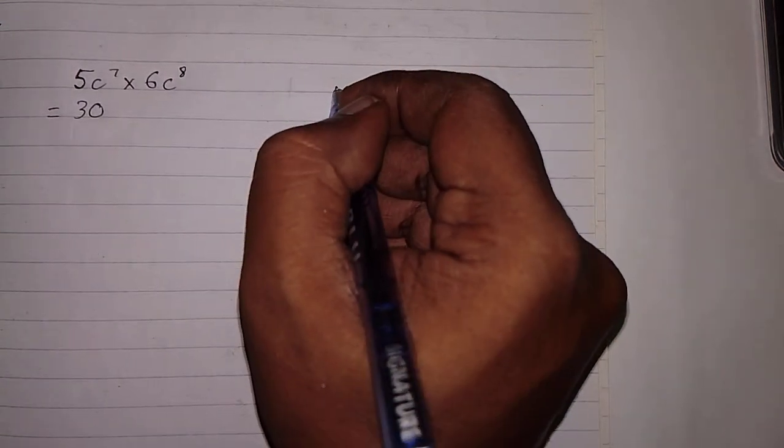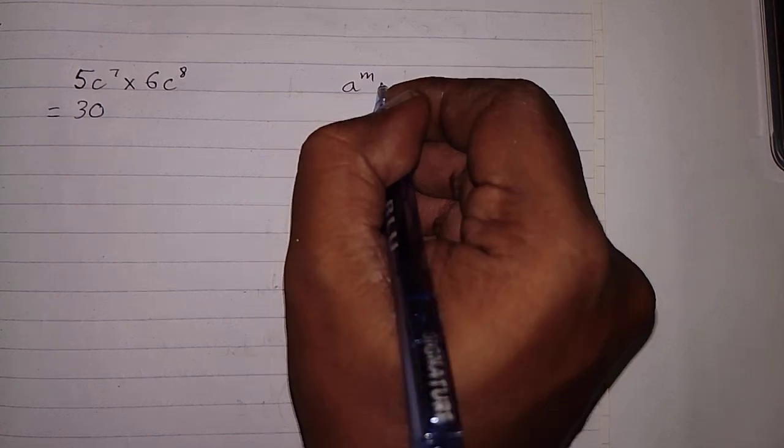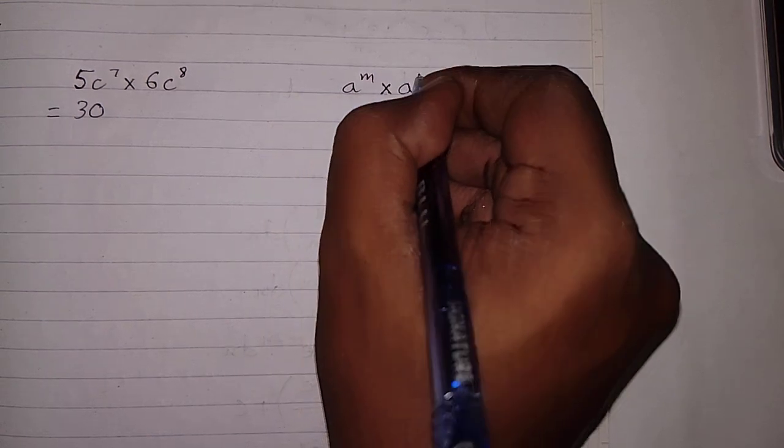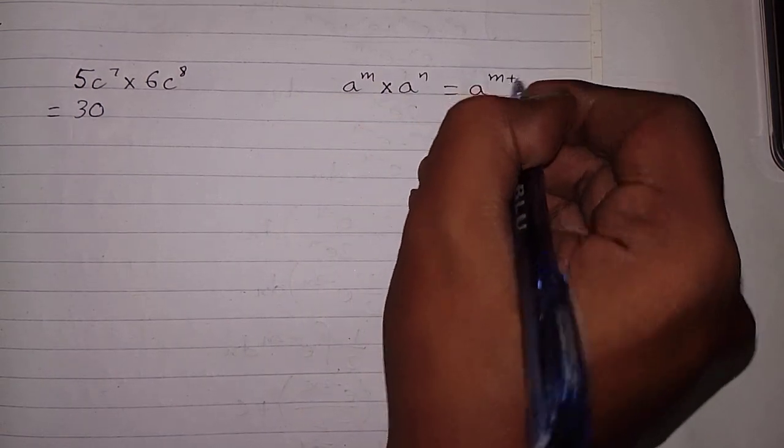Then we will use a rule of indices which is a raised to the power m multiplied by a raised to the power n is equal to a raised to the power m plus n.